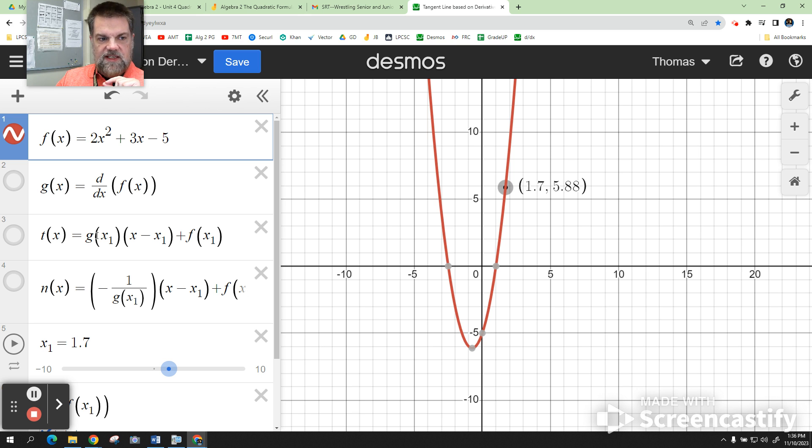times x minus x₁. When you subtract y₁, which is f(x₁), this gives you the tangent line.